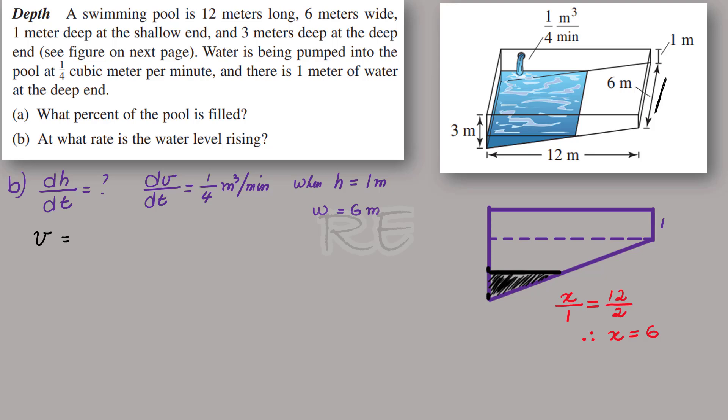We want the volume in terms of the linear change in the height. Let's look at it this way: the volume is the area of the triangle, so it's half of the base of the triangle times the height, multiplied by the width.